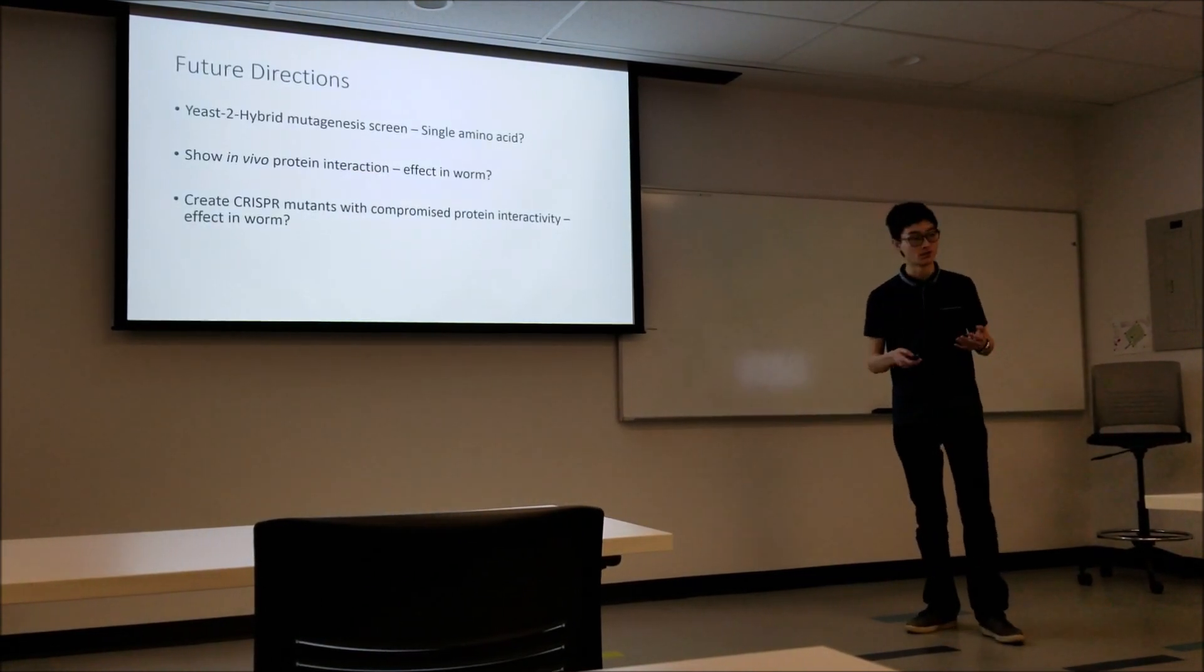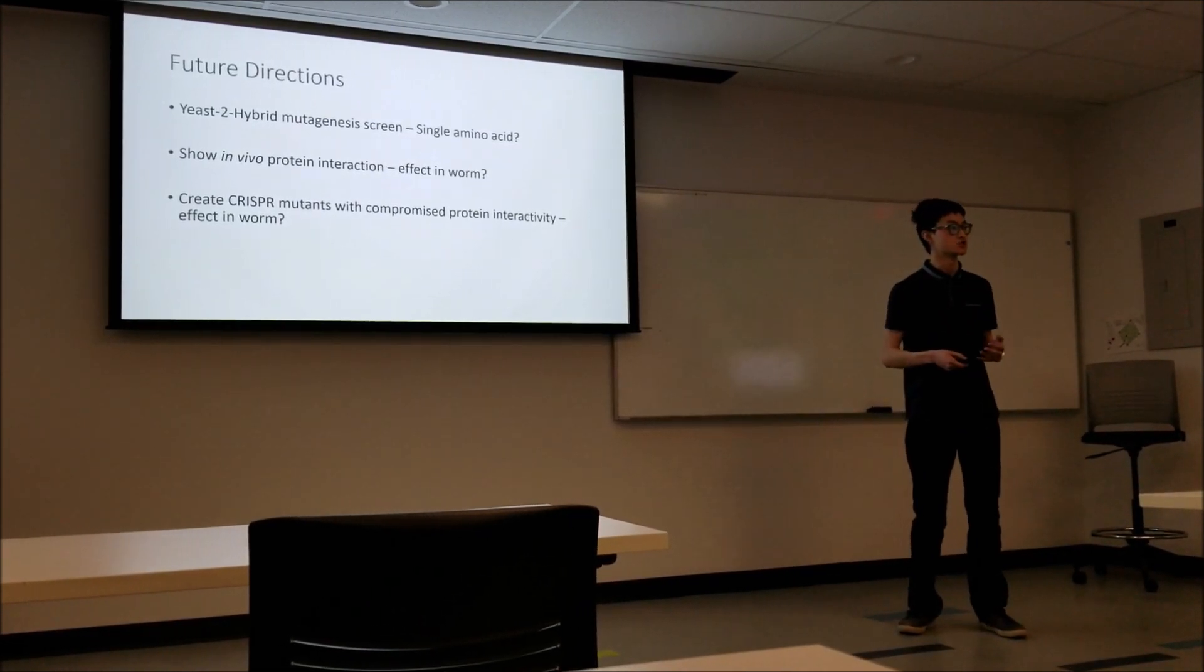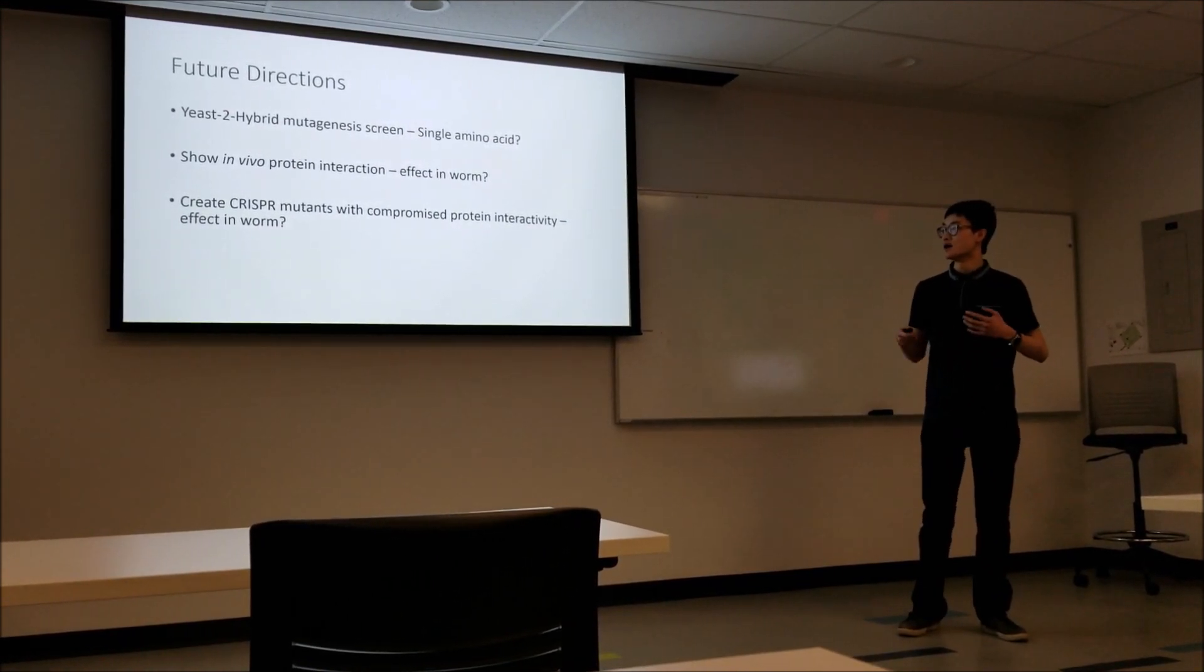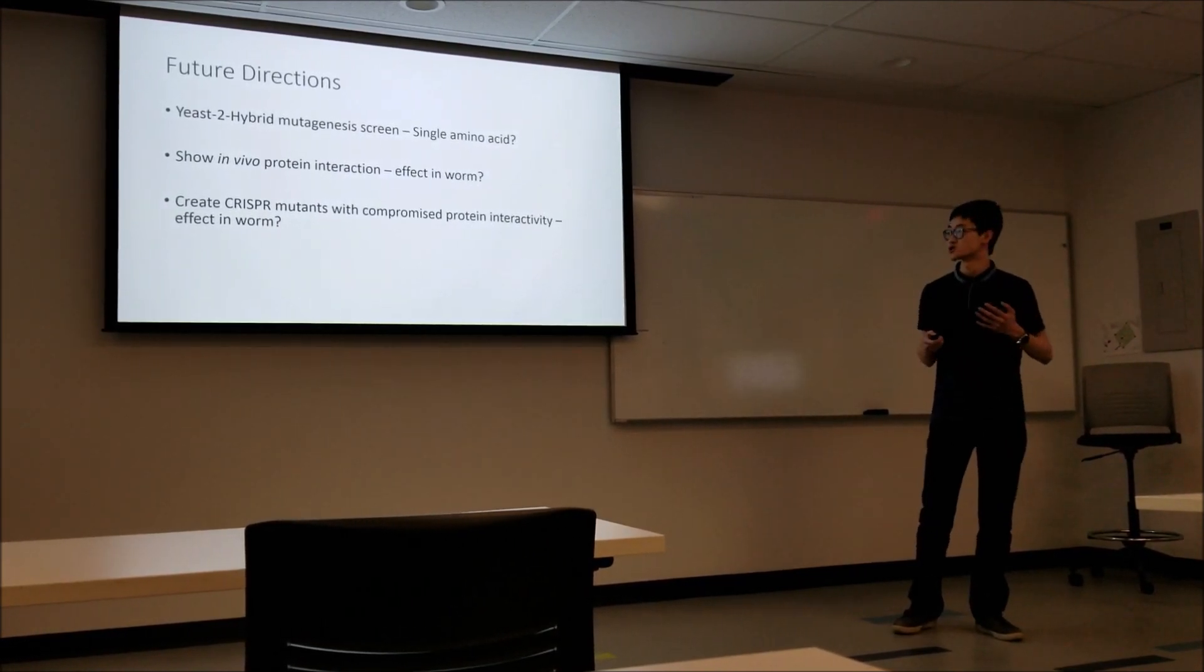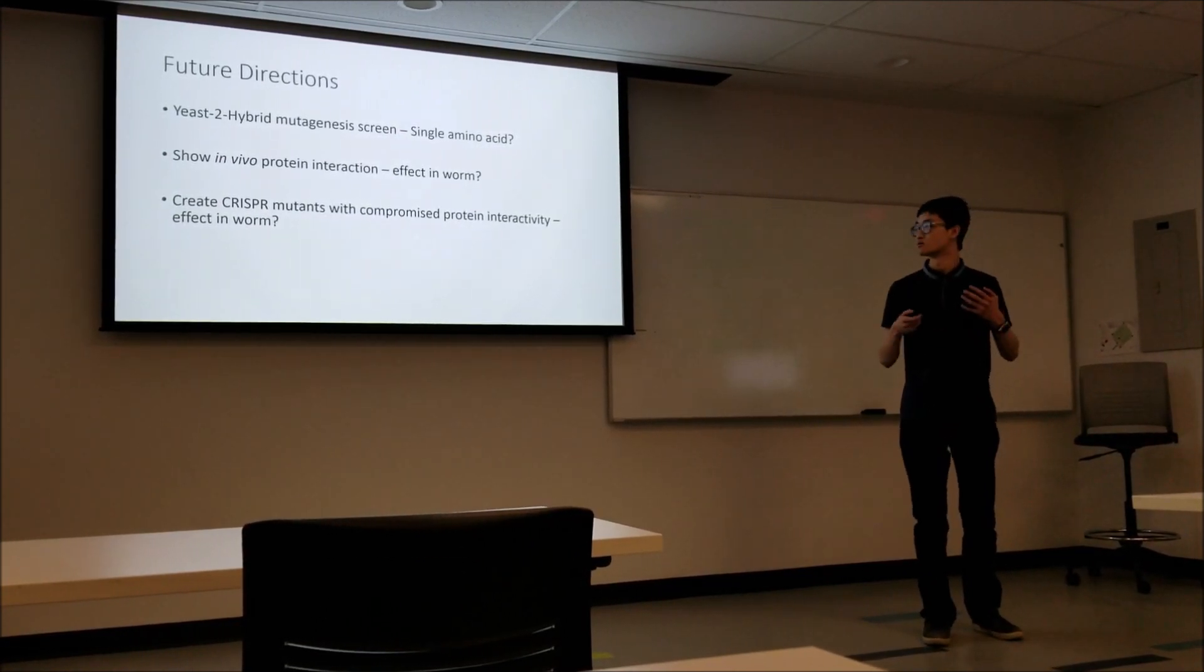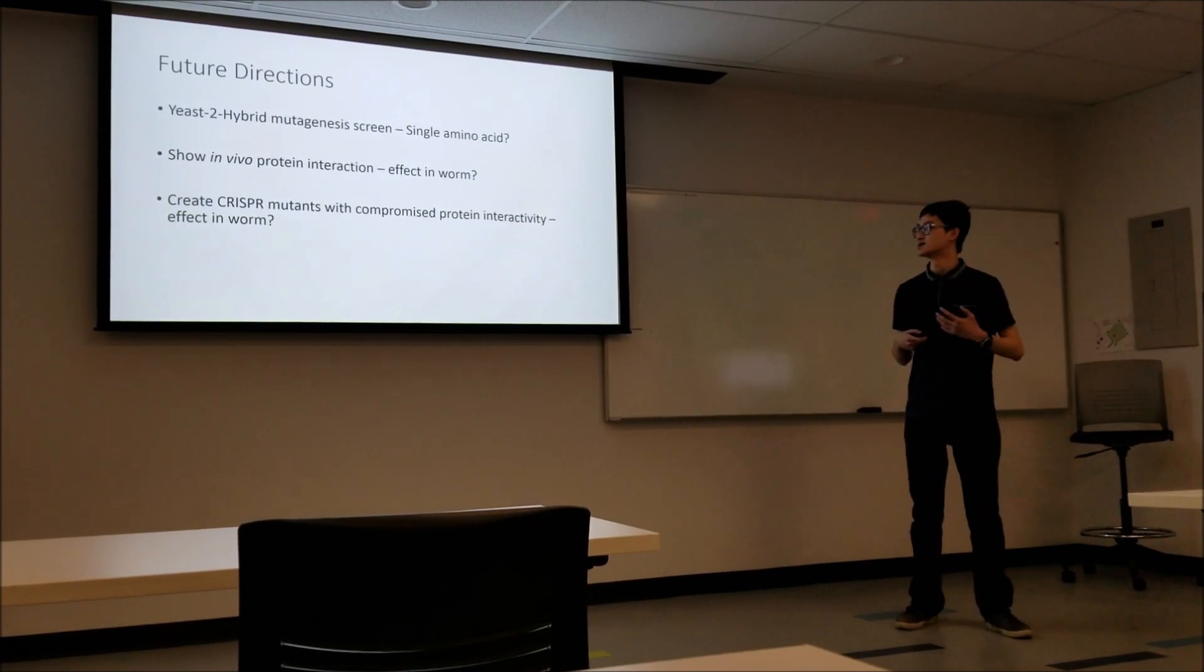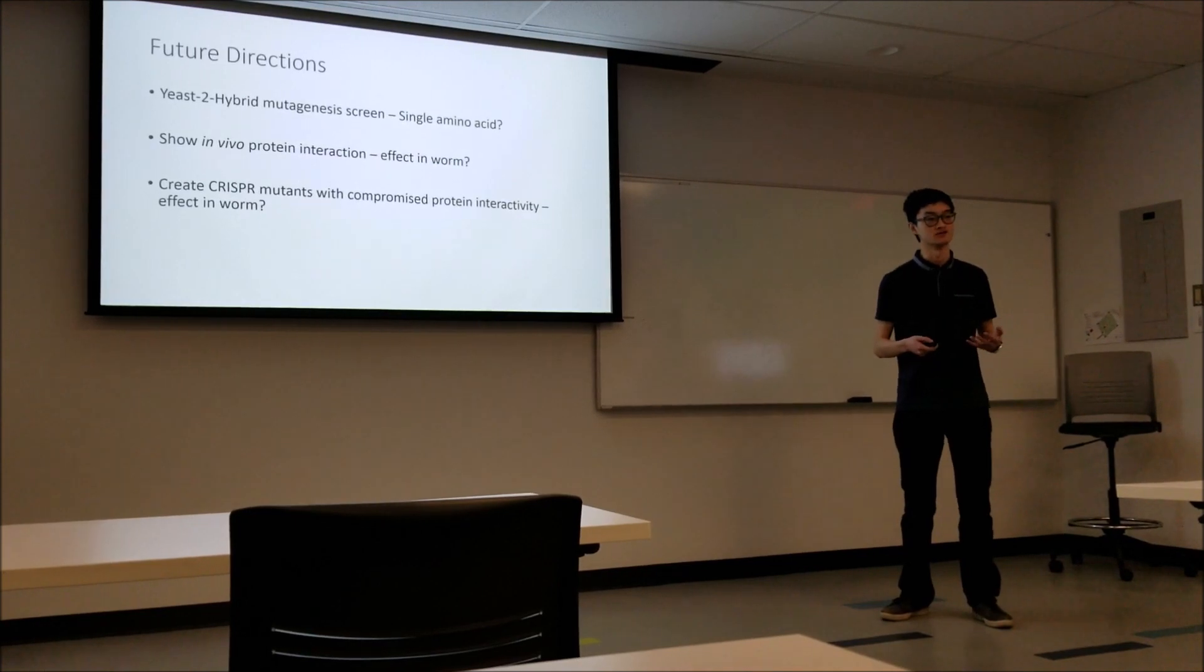Future directions I want to take this project in: I've got the region really narrowed down, but it'd be really nice to show exactly which amino acids are doing the interacting. I'm currently doing a yeast-2-hybrid mutagenesis screen to try to get at that. This has all been done in yeast, which is really good, but it'd be really cool to show the interaction in the worm. We do have some initial results for an in vivo protein interaction, but we definitely need to build on that. It would be a cool experiment to make CRISPR mutants that have some sort of compromised protein interactivity and see what kind of phenotypic effects might exist because of that.